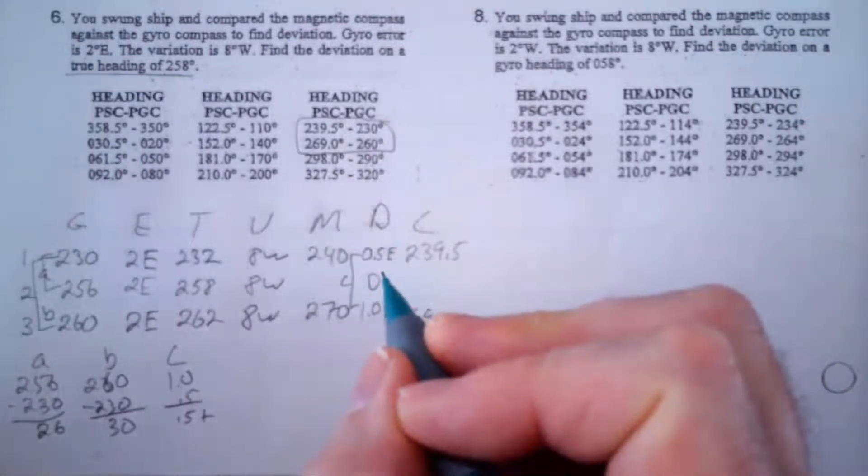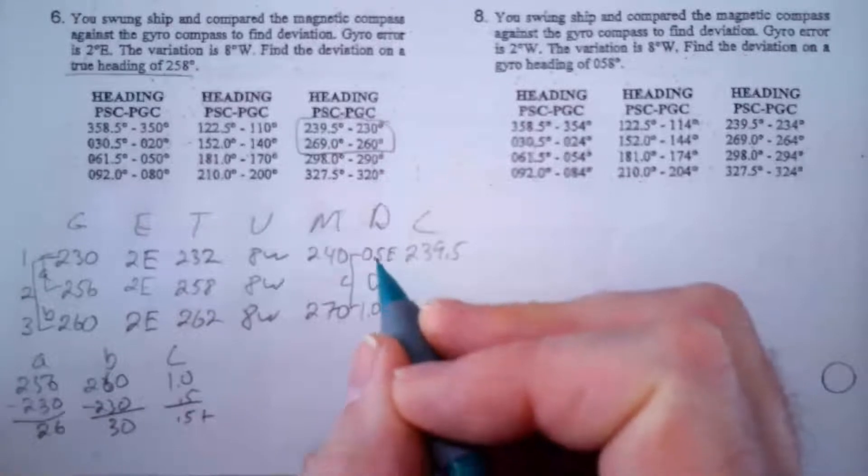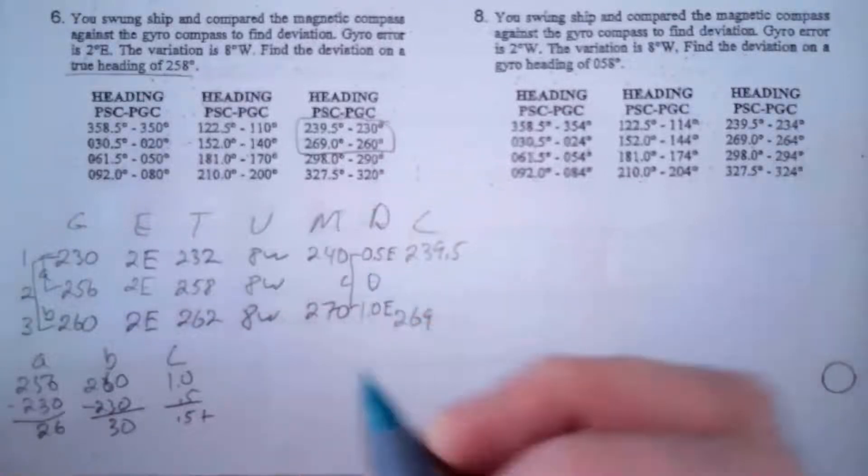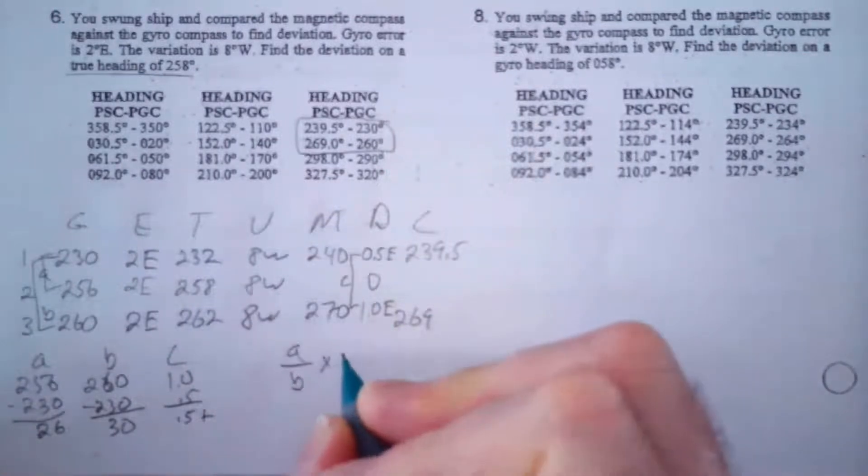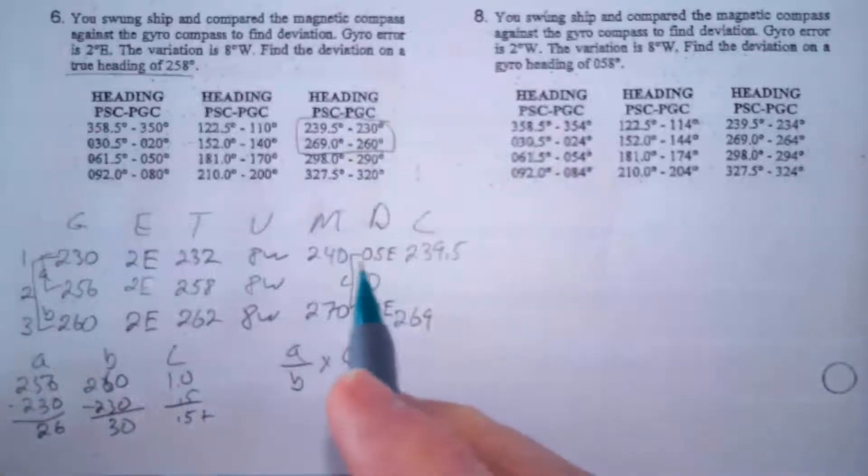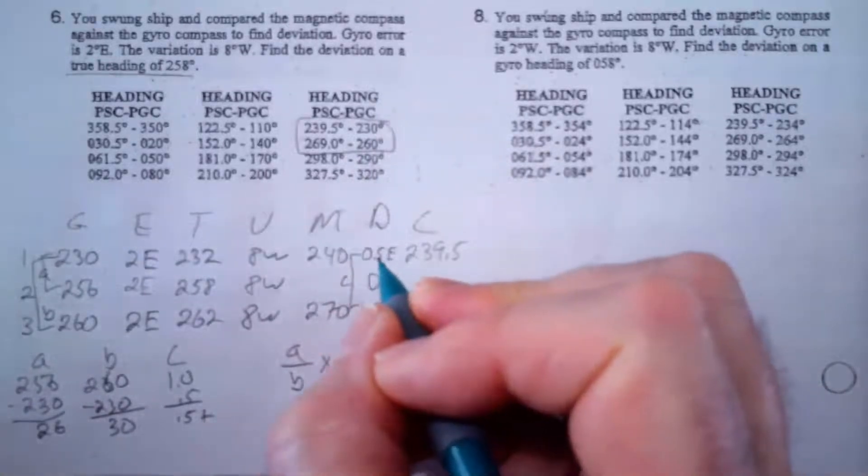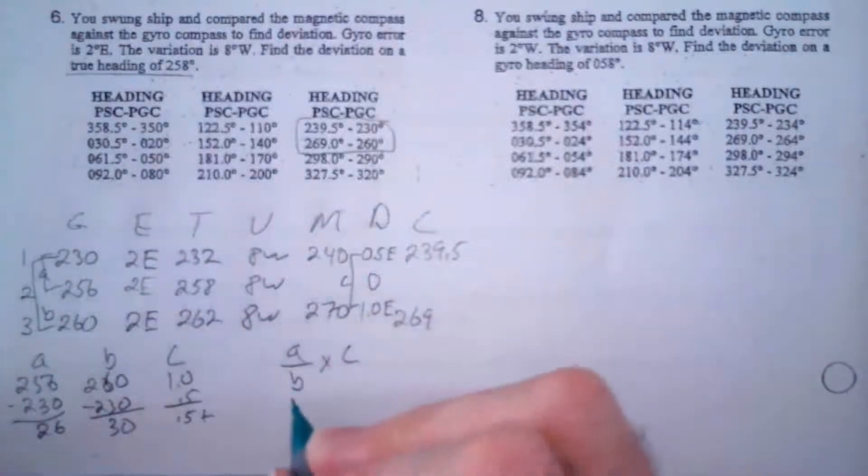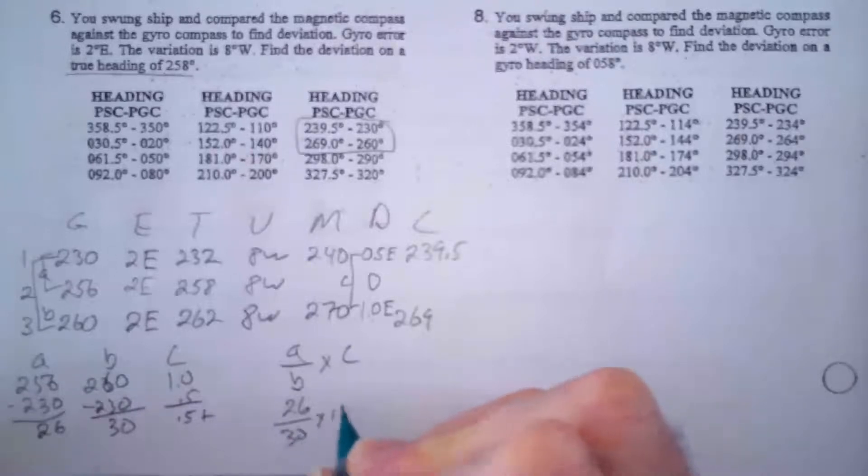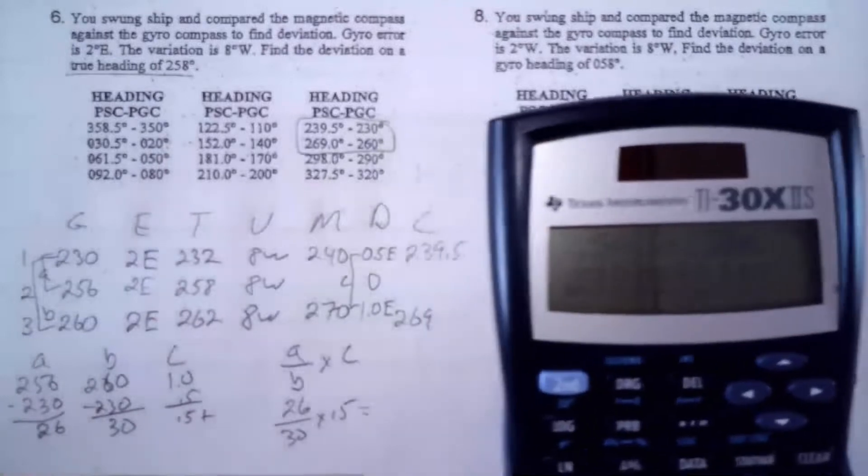So what I want to do is I want to figure out what that difference is there. So what I'm going to do is I'm going to go A divided by B times C, and that's going to give me the difference between this number and the deviation that I'm looking for. So what is A over B times C? That's 26 divided by 30 times 0.5.